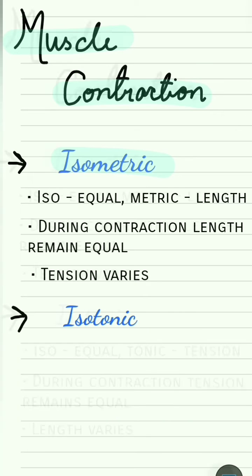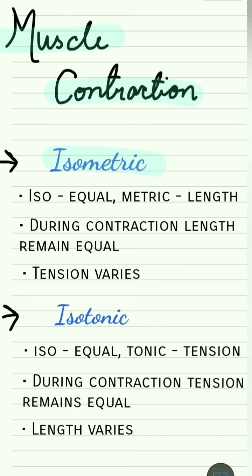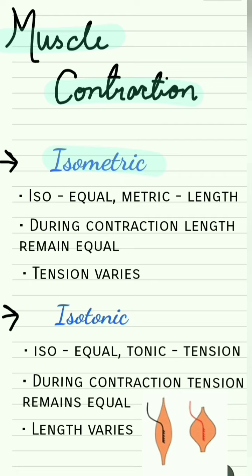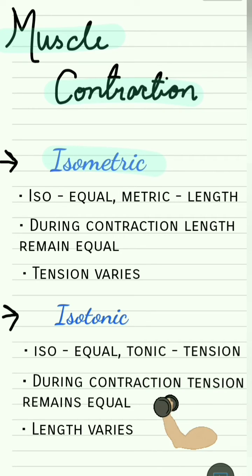Another type of contraction is isotonic contraction. 'Iso' means equal, 'tonic' means tension or force. So during this type of contraction, the tension remains the same but the length of the muscle will vary. For example, bicep curls — the tension in the muscle remains the same.